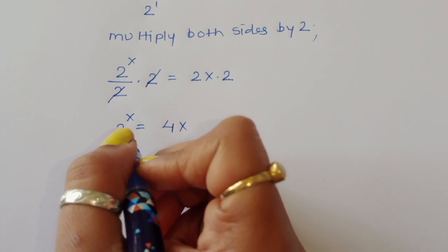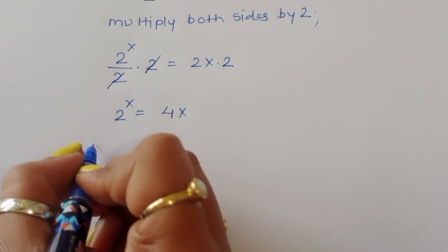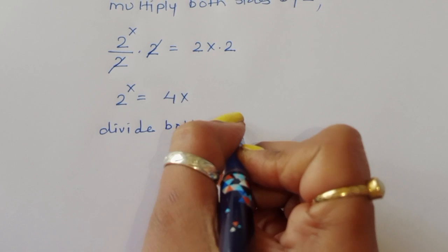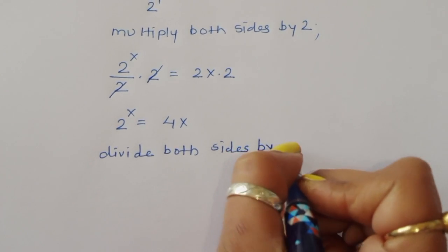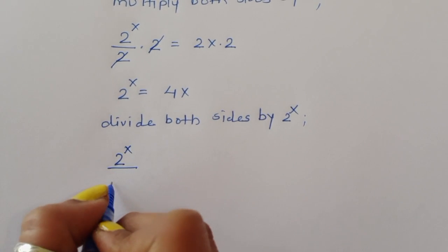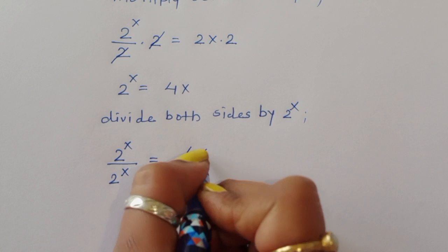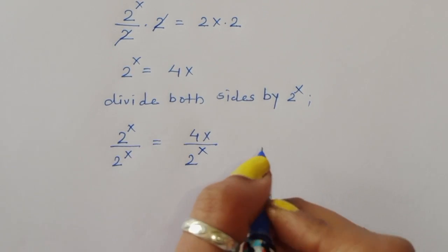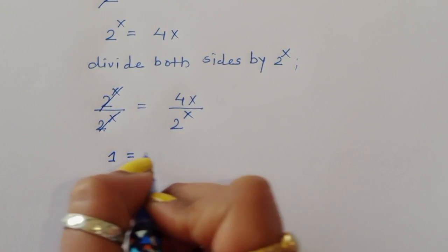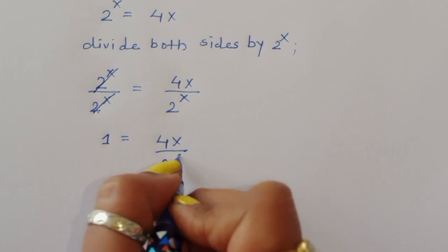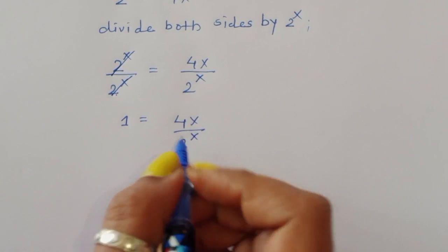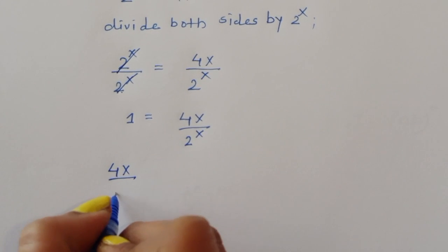Now we have to remove 2 power x, so we divide both sides by 2 power x. Then we get 2 power x divided by 2 power x equals 4x divided by 2 power x. The 2 power x cancels, so 1 is equal to 4x divided by 2 power x.